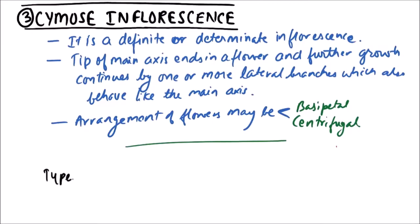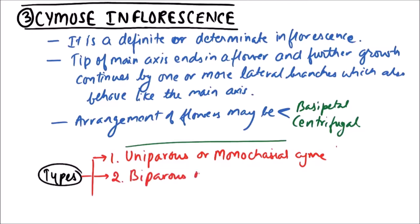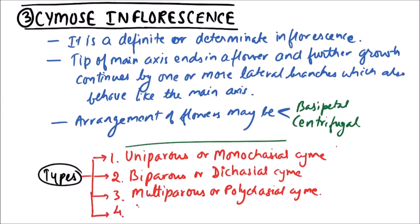Now the types of cymose inflorescence. These are uniparous or monochaseal cyme, biparous or dichaseal cyme, multiparous or polychaseal cyme, and cymose head or glomerule.